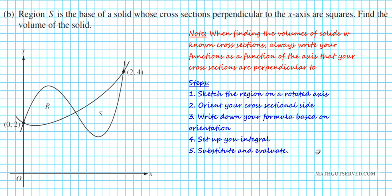Now let's take a look at part B. It reads: region R is the base of a solid whose cross sections perpendicular to the x-axis are squares. Find the volume of the solid. When finding volumes of solids with known cross sections, always write your functions as a function of the axis that your cross sections are perpendicular to. Since the cross sections are perpendicular to the x-axis, everything will be a function of x and limits of integration will be x values.